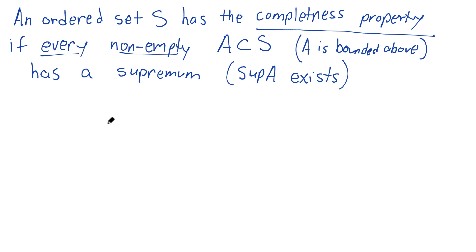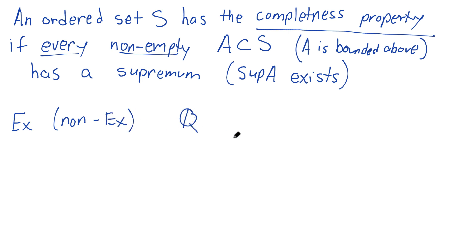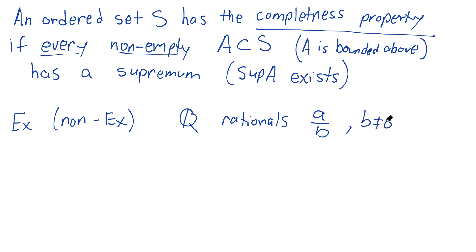Let's look at a non-example. Obviously this is real analysis, so you'd probably guess that the real numbers, the set R, has this completeness property. But what about something that doesn't? The classic non-example is Q — the rationals. If you haven't seen this notation before, the rational numbers are things that are fractions, things that look like A over B, where A and B are integers and B is not zero.